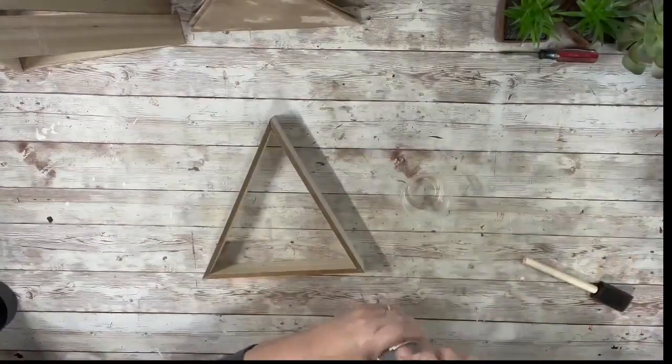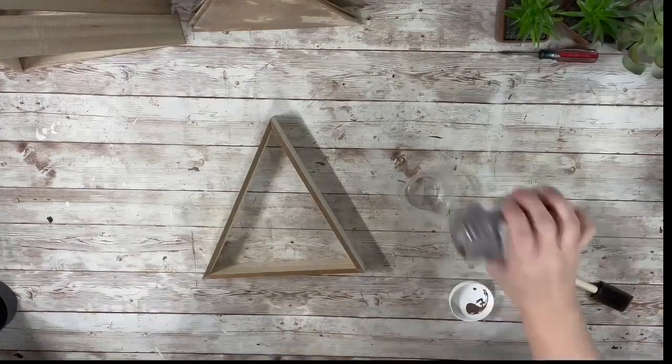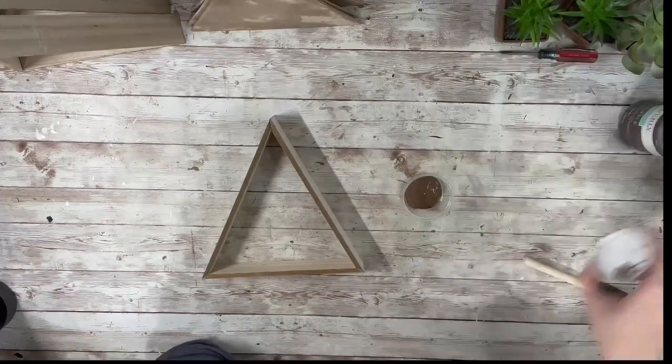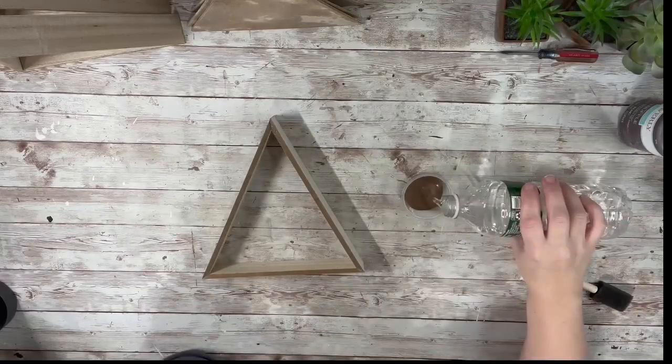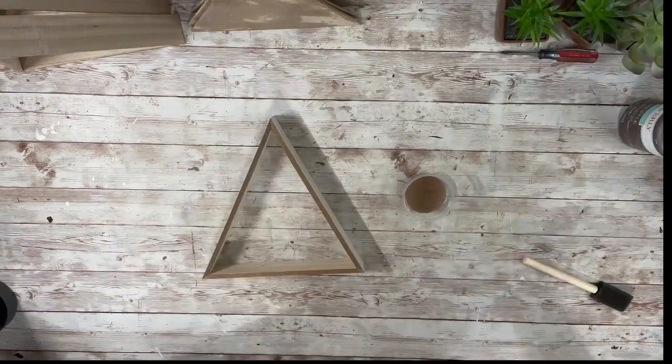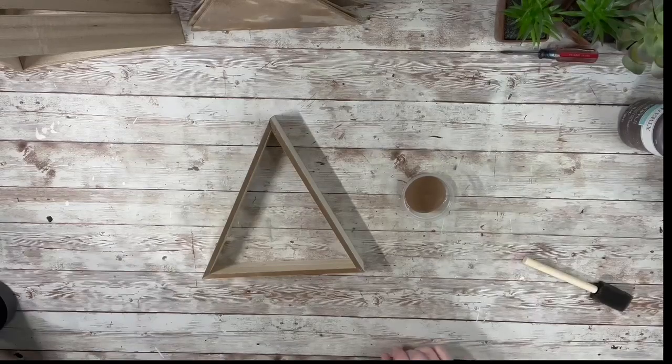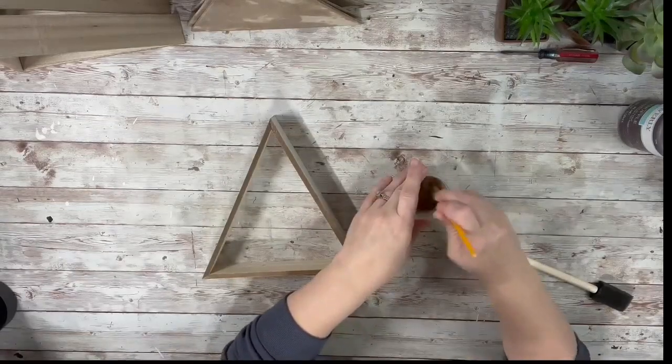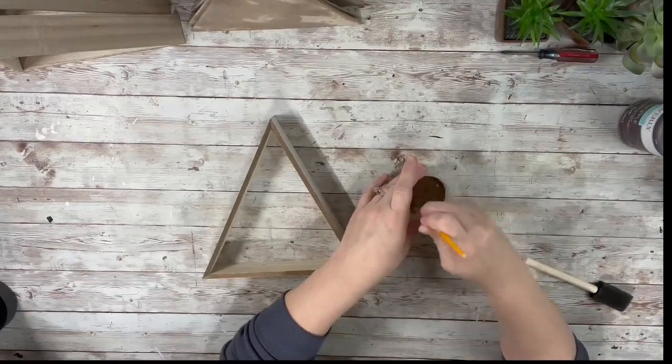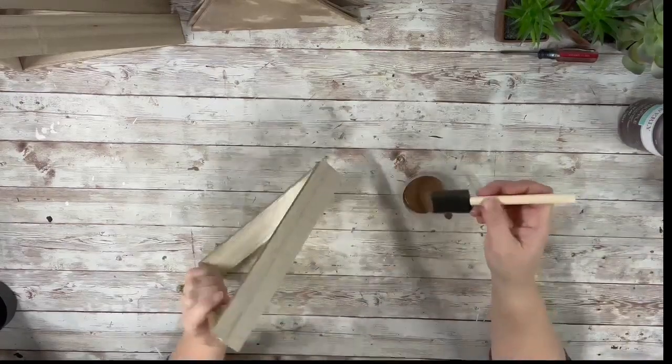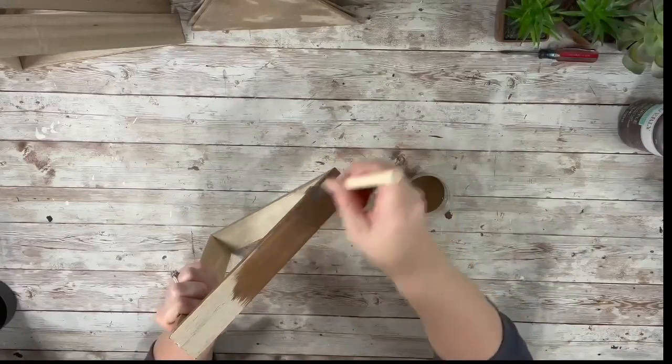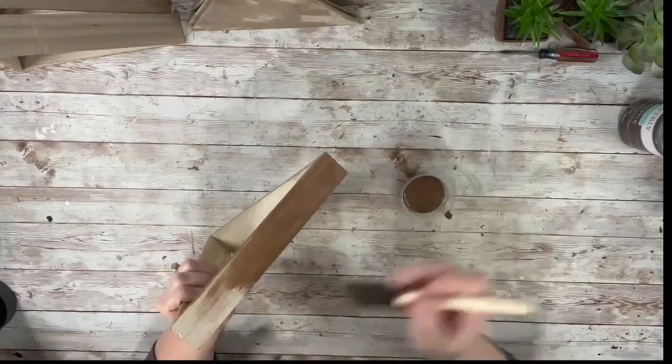Next thing I did was took the Waverly chalk paint in truffle and poured a little bit of it out and mixed it with some water and then applied that to each of the outer part of the boxes. It'll give it more of like a stained look rather than a painted look. So on all three of those, I applied the watered down chalk paint to the very outside, the inside part of these, and the very front.